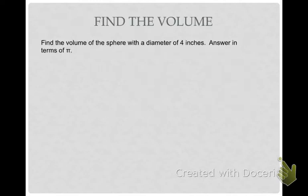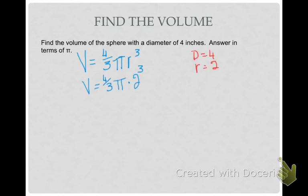All right, let's use this. Find the volume of the sphere with a diameter of 4 inches. Answer in terms of pi. Well, let's write down our formula first. 4 thirds pi r cubed. And, then, I know this is a 4 inch diameter, so half of that is 2. So, my radius is 2. So, I'm going to put my radius into my formula. And, then, I am going to solve it by taking 4 thirds times 2 to the third. And, you could answer like this, 32 thirds pi inches cubed.